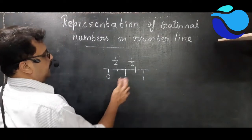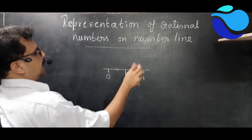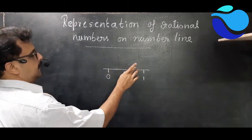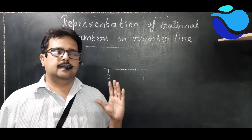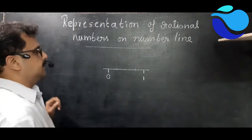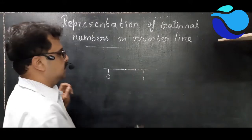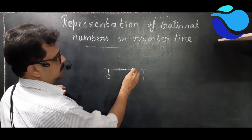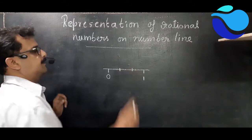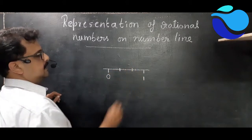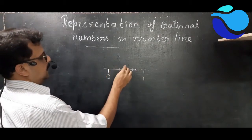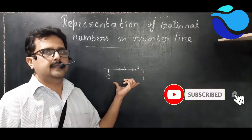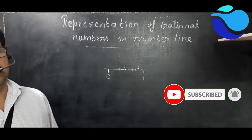Now how can you divide this number line into three parts? You have to represent one third of a number line. For that I will take one point here, another point here — look, one, two, and three parts. So I have divided this one centimeter into three equal parts.